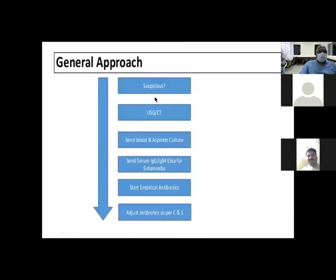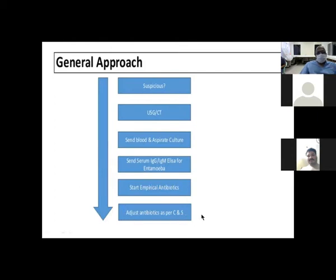General approach: suspect the diagnosis, perform ultrasonogram and CT, send blood and aspirated fluid for culture, send serum IgG and IgM ELISA for Entamoeba histolytica, and start empirical antibiotics. If the patient has acute dysentery, test for Entamoeba in stool. Subsequently adjust antibiotics as per culture sensitivity report.